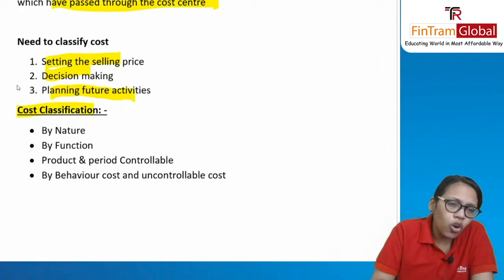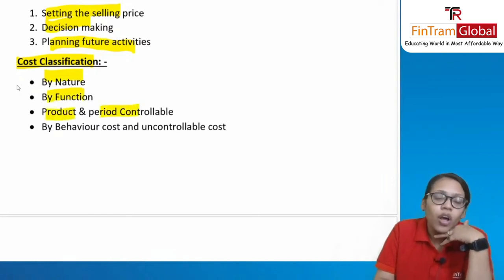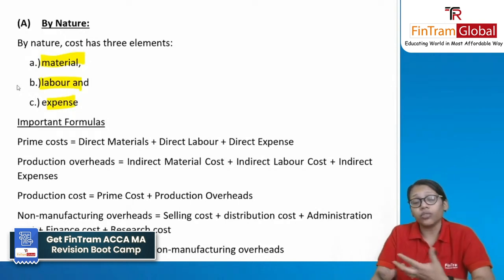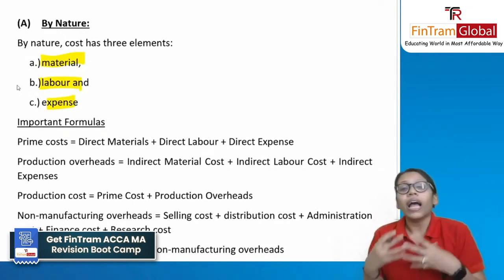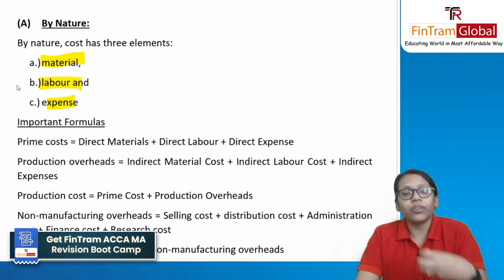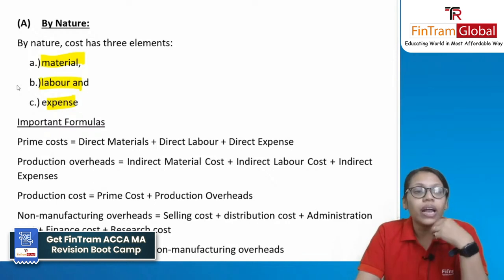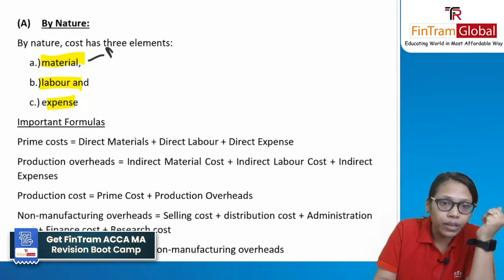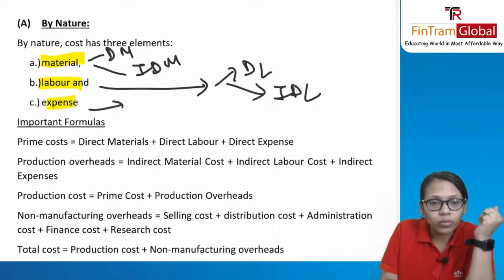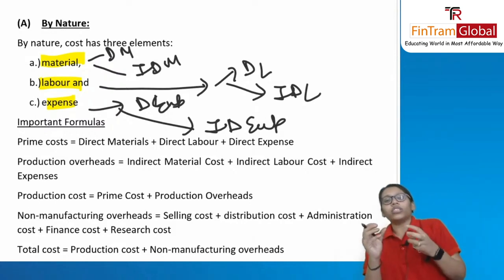Cost can be classified on different bases: by nature, by function, by product and period, and by behavior. On the basis of nature, costs are classified into material, labor, and expenses — that's why we have entire chapters on material, labor, and expenses. Each of these can be direct or indirect. Direct material is used in the production activity; indirect material is not directly used in production.